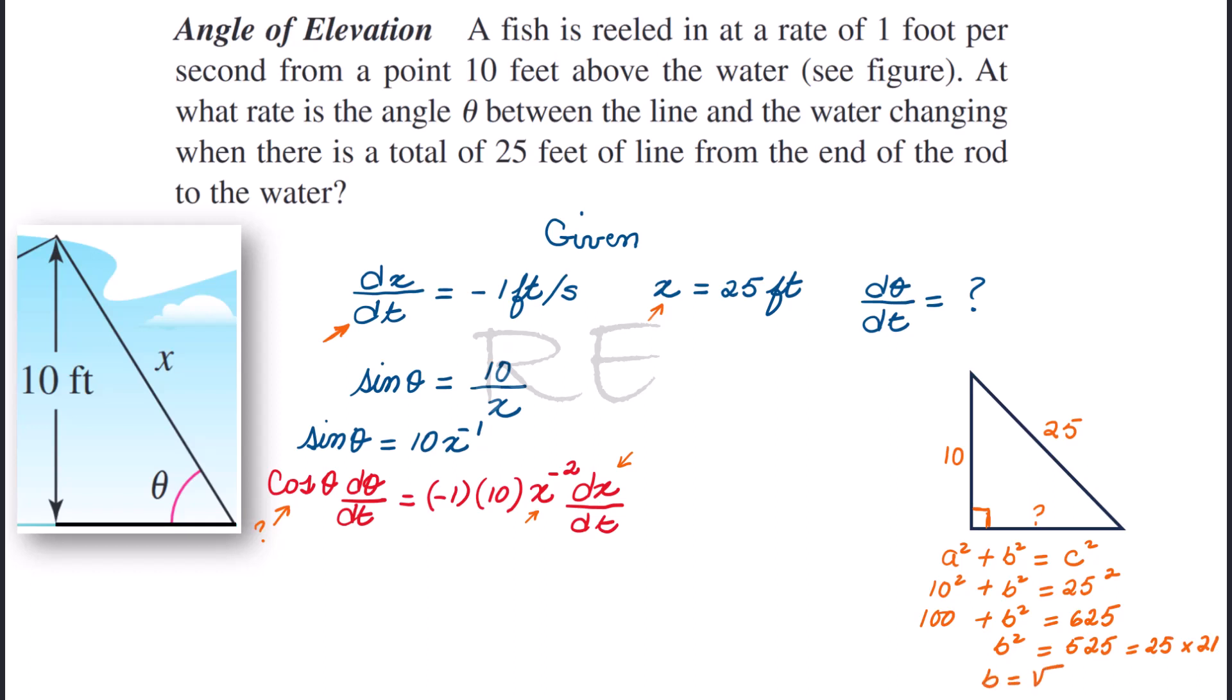Therefore, b is equal to the square root of 25 times the square root of 21, which is 5 square root of 21. And this is the exact value of b, the base.